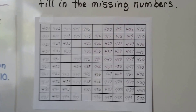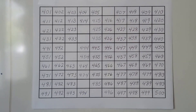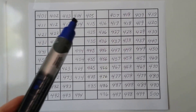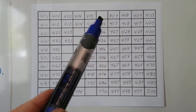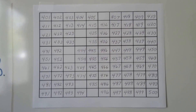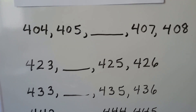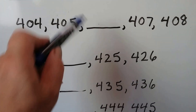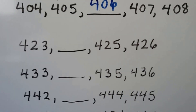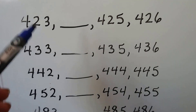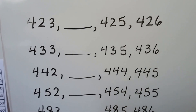We can fill in the missing numbers. I have a chart here that goes from 401 to 500 with some missing numbers. They're all in order, adding one more: 401, 402, 403, 404, 405 — so 406 would go there. We can fill in missing numbers by following the pattern. 404, 405, 406, 407, 408. What would go after 423? 424 would fit perfectly.